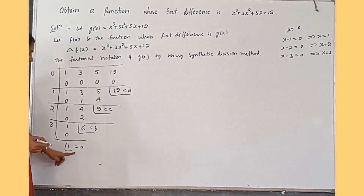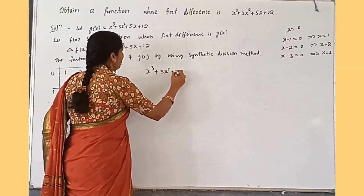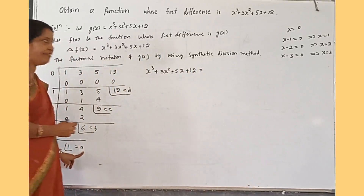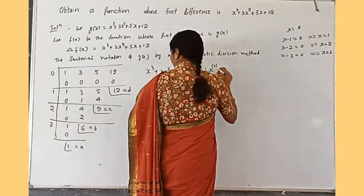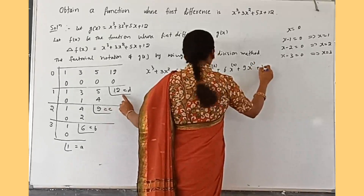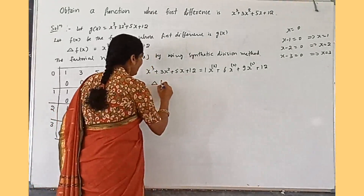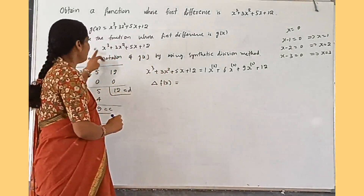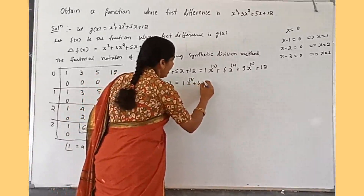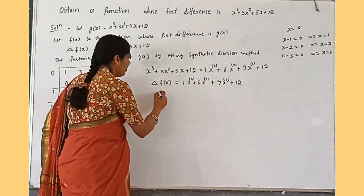So the given function x³ + 3x² + 5x + 1 can be written in factorial notation as: 1·x⁽³⁾ + 6·x⁽²⁾ + 9·x⁽¹⁾ + 12, where x⁽ⁿ⁾ denotes the nth factorial. Now this expression is nothing but Δf(x), because we defined the first difference of f(x) as this function. So Δf(x) = 1·x⁽³⁾ + 6·x⁽²⁾ + 9·x⁽¹⁾ + 12.